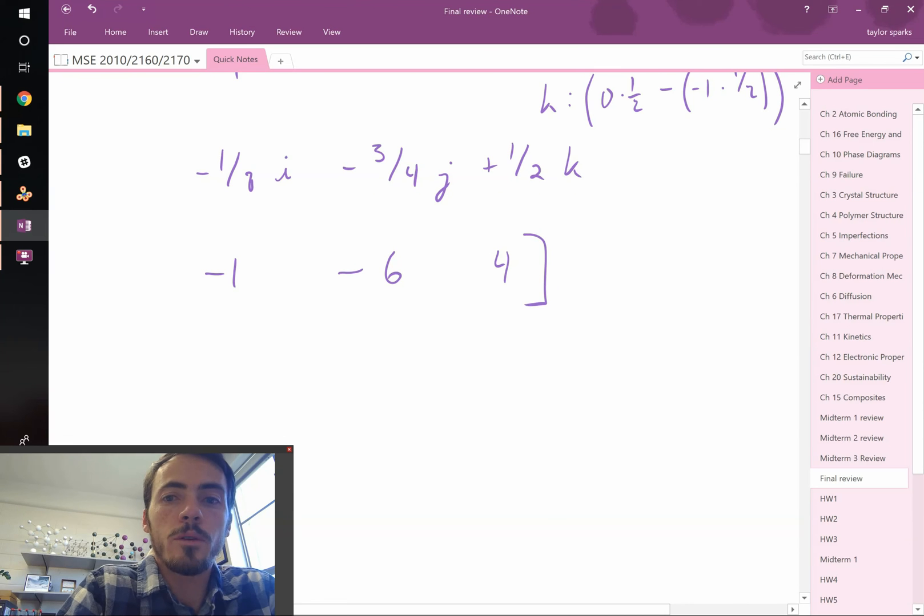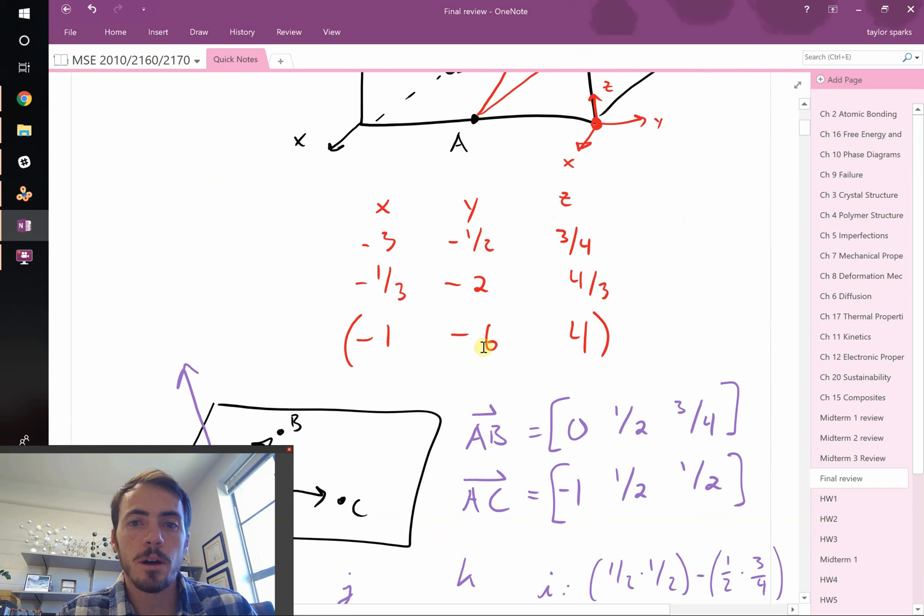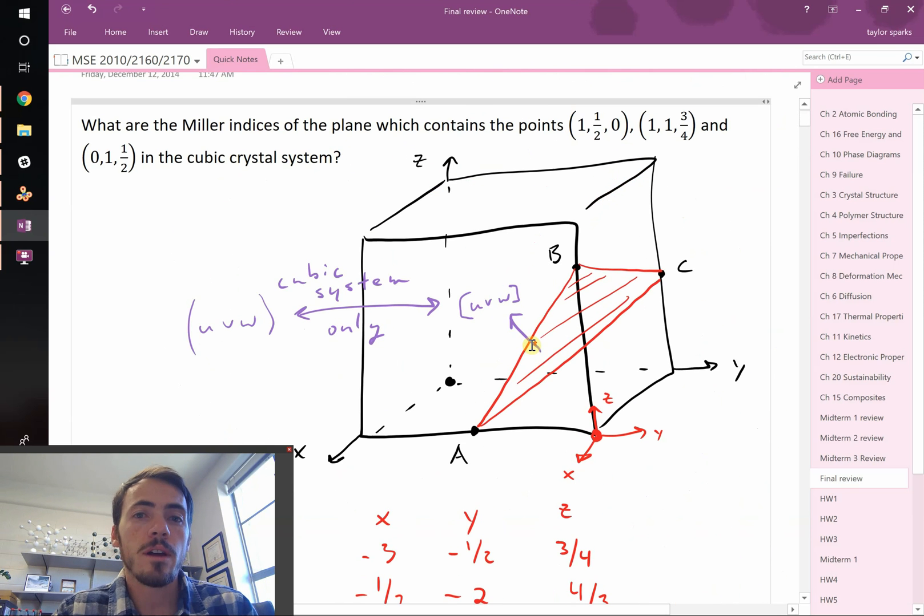Or in other words, that's our normal to our plane, therefore that's the same as the plane: minus 1, minus 6, 4, which you'll also see written as 1-bar, 6-bar, 4. And how does that compare to what we found earlier? Minus 1, minus 6, 4. It's the exact same thing. So either approach works just fine. That's how you figure out the plane which contains 3 points in a cubic crystal system.